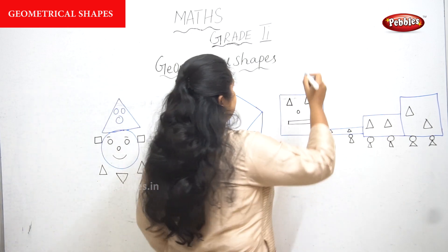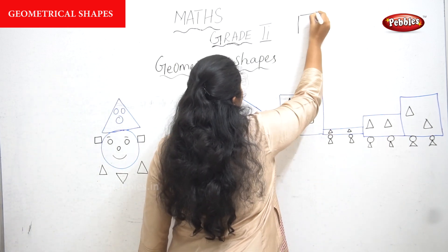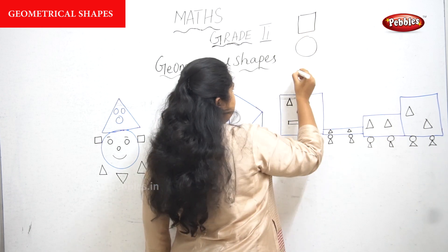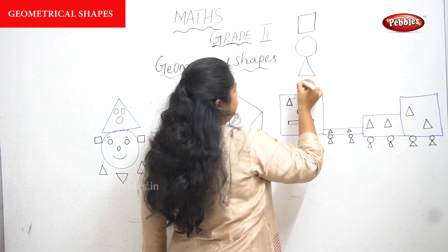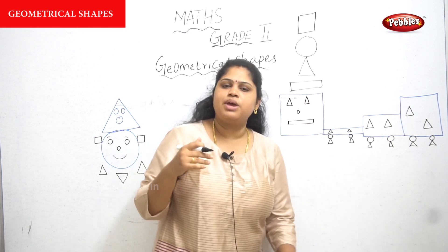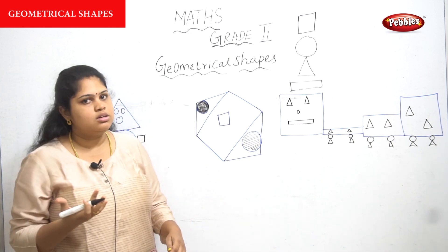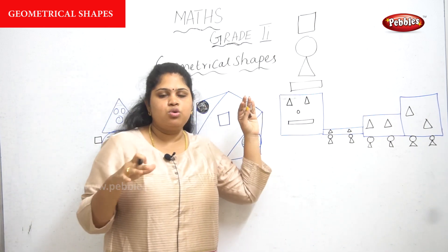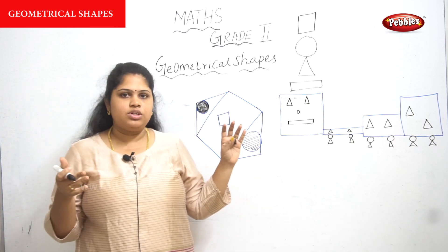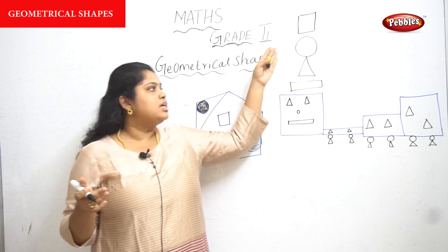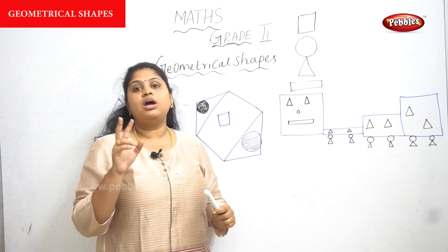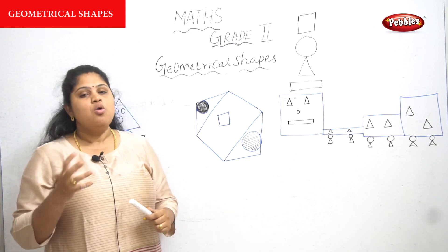For example, this is the square, this is the circle, this is the triangle, and this is the rectangle. We have seen some basic shapes in first standard itself. Keeping the reference of those shapes, we are now going to do some activities regarding square, circle, triangle, and rectangle.